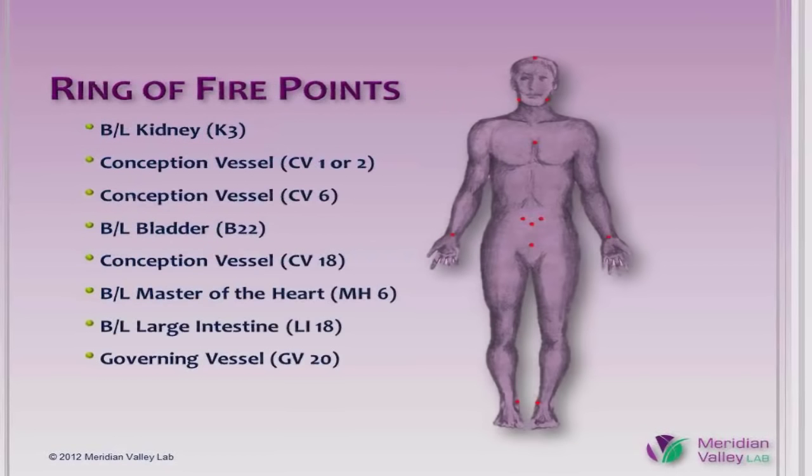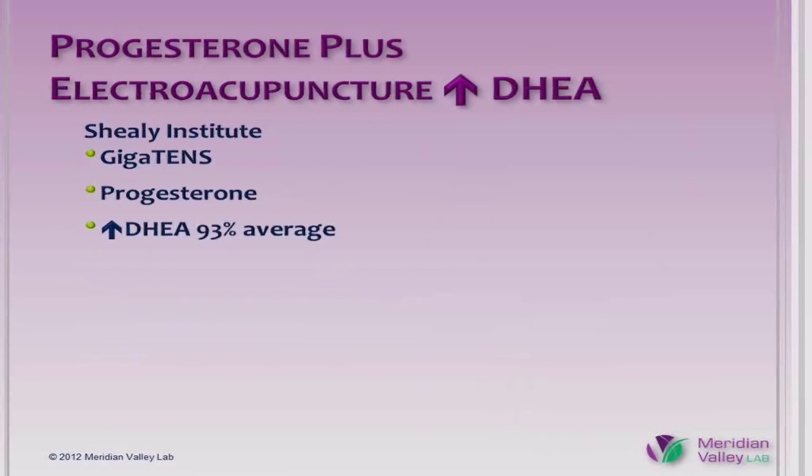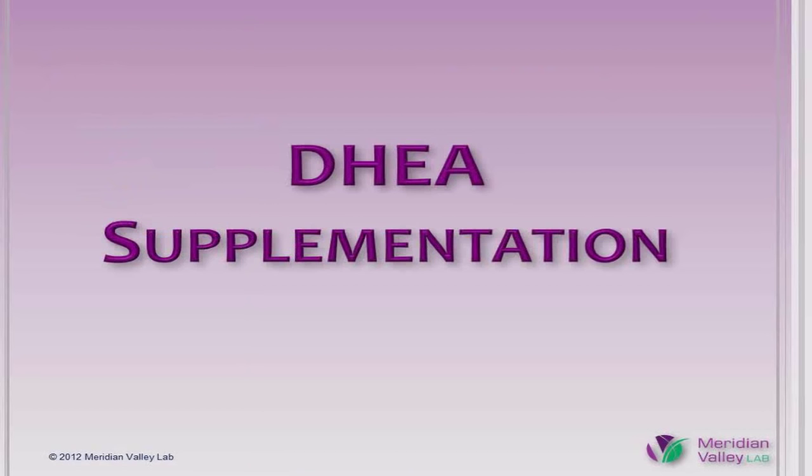Here is a map of the 12 points used for the Ring of Fire treatments, useful if you are an acupuncturist or have an acupuncturist working with you. Dr. Sheely reported that the combination of progesterone and the Giga10s unit increased DHEA levels an average of 93%.